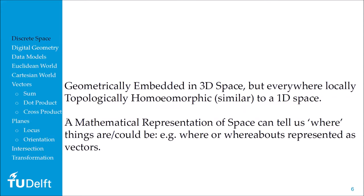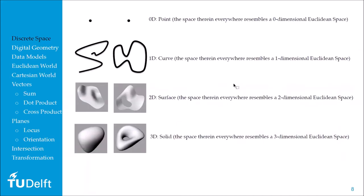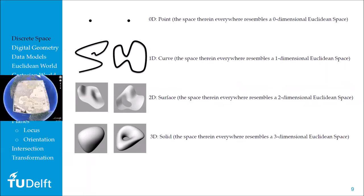The reason we bother with such definitions is about getting more serious with the concept of space. Loosely speaking, a mathematical representation of space tells us where things are or could be, and how things can move within that space. This is the more geometric sense of the word 'space,' but we also need the topological definition, which will be the subject of the next lecture. A two-dimensional surface means the space inside everywhere resembles a two-dimensional Euclidean space — which raises the question: what is a Euclidean space?